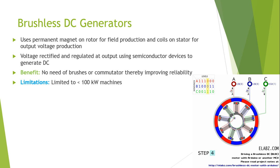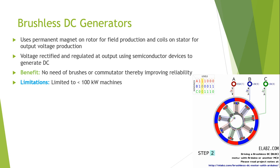The electrical resistance of the sliding brush contact causes a voltage drop in the motor circuit, called brush drop, which consumes energy. Additionally, motors with brushes and commutators have a problem of sparking, which has been completely removed by using brushless DC motors and DC generators.